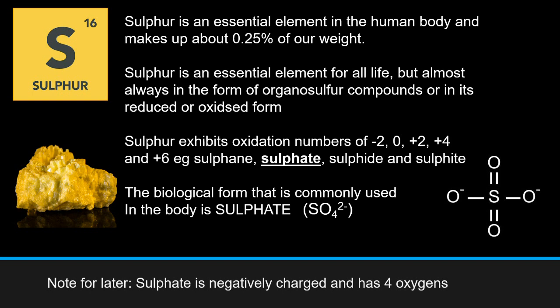The biological form most commonly used in the body is sulphate, which is what Glyn is going to be talking about later. As you can see from the schematic, it has four oxygens, and sulphate is negatively charged with a chemical formula SO4 2−.